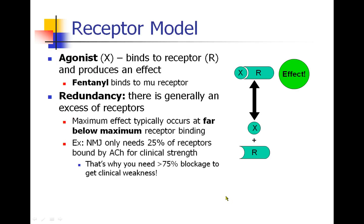Next, we need to talk about the receptor model. This is something you've probably been exposed to before, but we'll just do a quick review. We start by defining an agonist — a molecule that binds to a receptor and produces an effect. For example, fentanyl binds to its mu receptor and produces analgesia, or pain relief. So here we see fentanyl binding to its receptor and causing an effect.